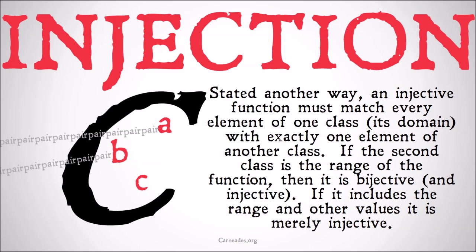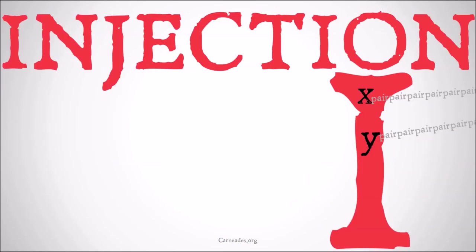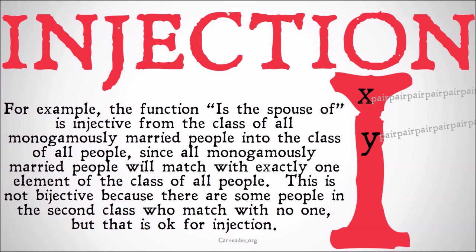So if you have a bijective function and then you add a couple more members to the range that don't match anything in the domain, suddenly you have an injective function — or rather to the class, the second part — because it wouldn't be the range if it includes members which are not part of the actual function. For example, the function 'is the spouse of' is injected from the class of all monogamously married people into the class of all people, since all monogamously married people will match with exactly one element of the class of all people, and each member of that class will match with at most one member of the class of all monogamously married people, though they may match with zero people. This is not bijective since there are some people in the second class who will match with no one in the first class.